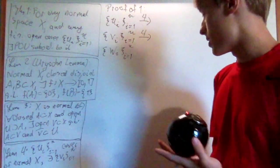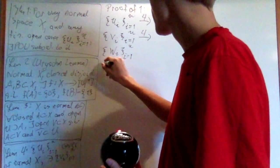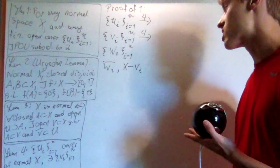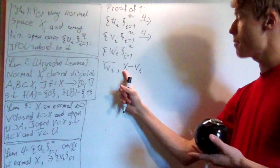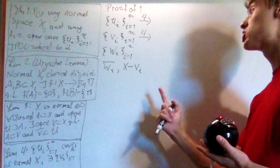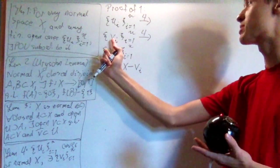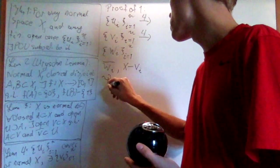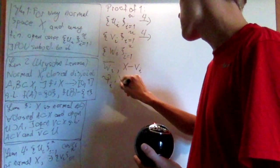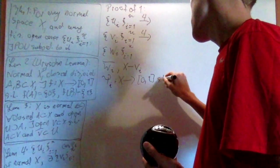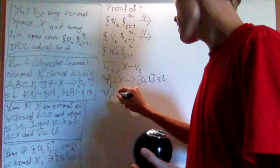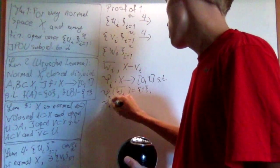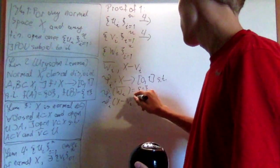And then what I'll use is the uri-san lemma. And I'll use the uri-san lemma on w i bar and x removing v i. Clearly, both of these are closed. That's a closure, of course. That's the complement of an open set. So both of these are closed, and they're disjoint because w i bar is a subset of v i. And so if I do the complement, then they're disjoint.